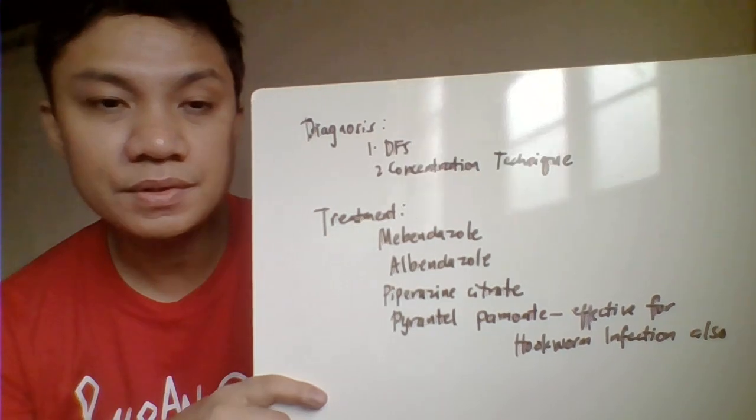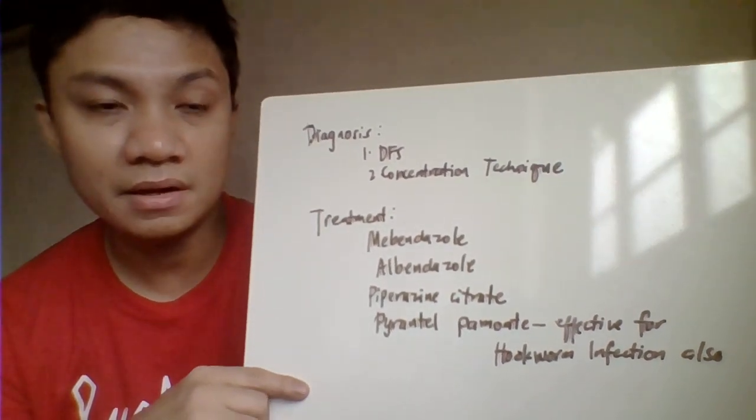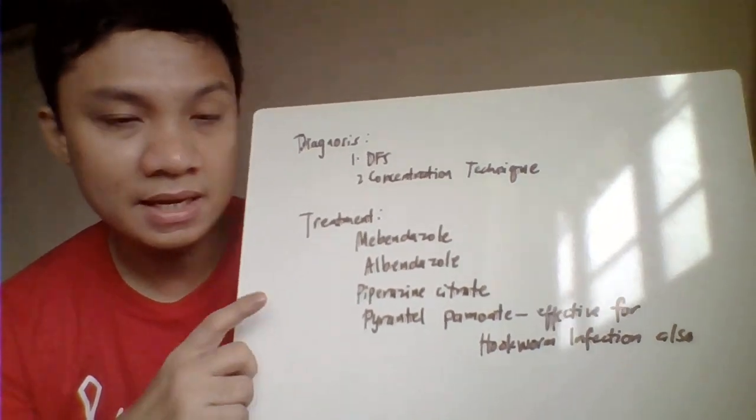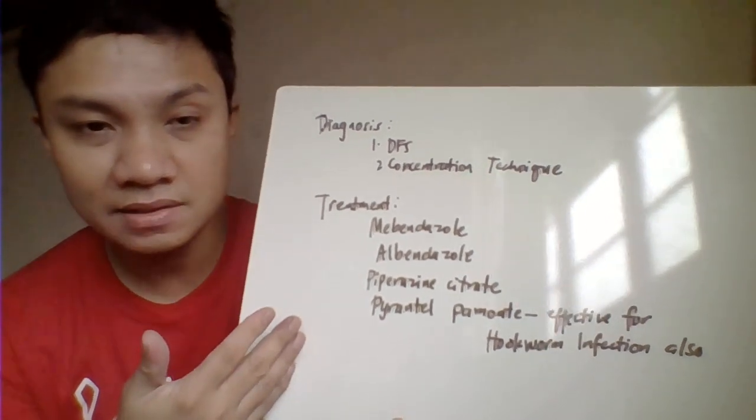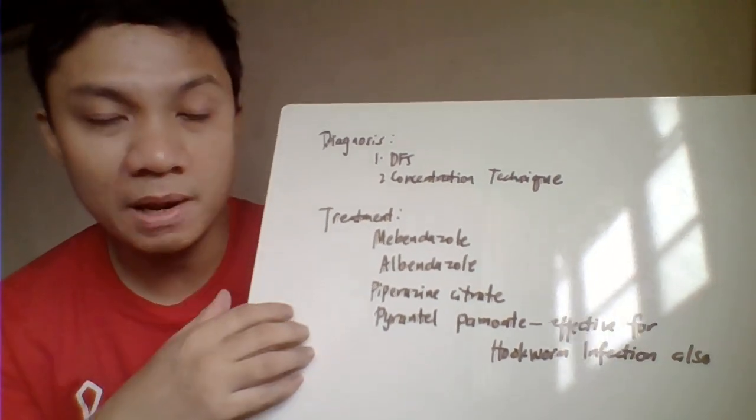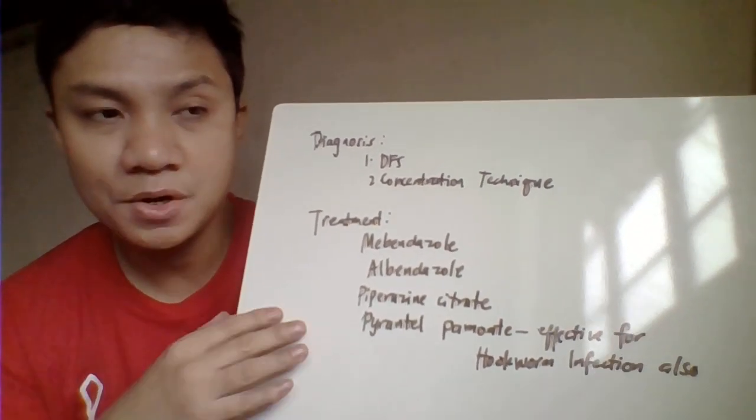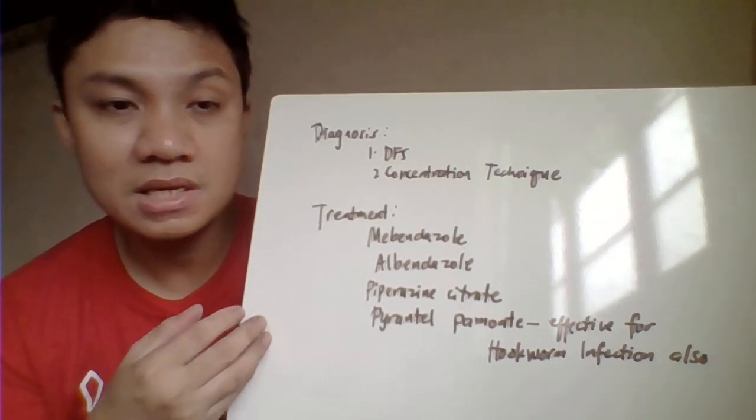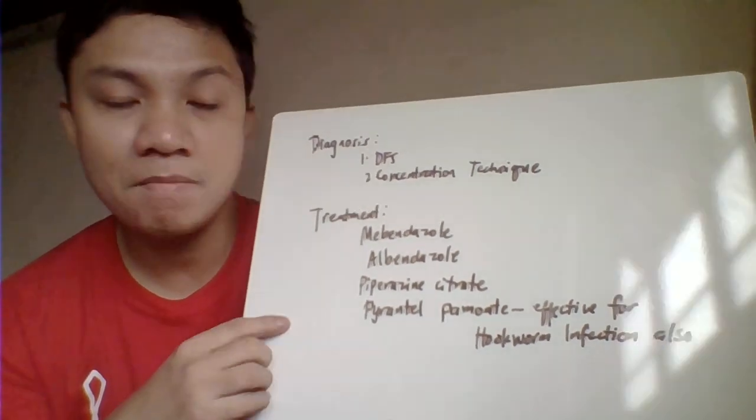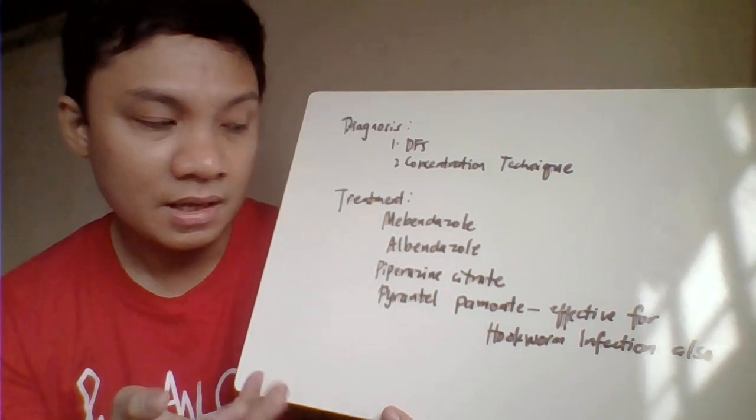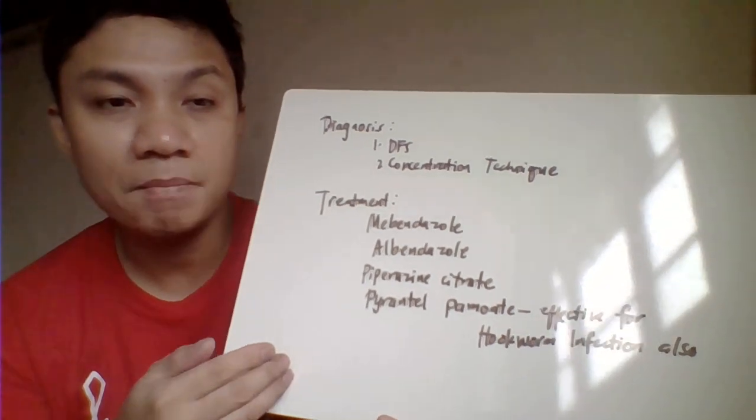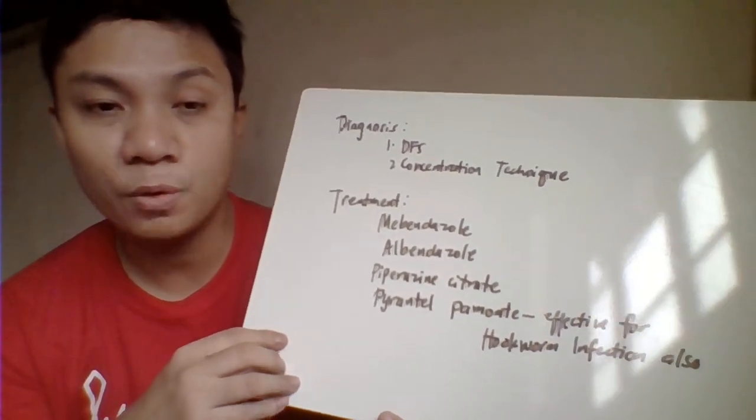For diagnosis of Ascaris infection, we have DFS - direct fecal smear with stool sample for identification of ova - and the concentration technique. For treatment, drugs for nematode or roundworm infections are applicable regardless of species. We use mebendazole, albendazole, piperazine citrate, and pyrantel pamoate, which is also effective for hookworm infections.